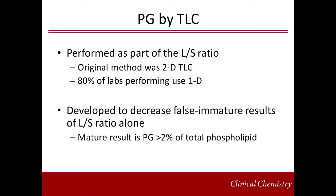The presence or absence of phosphatidylglycerol, or PG, was not originally a part of the LS ratio. However, it was added in order to decrease the number of false immature results. By adding PG to the LS ratio when you do thin layer chromatography, the sensitivity of the LS ratio was maintained while increasing the test specificity. A mature result is a PG greater than 2% of total phospholipid. The main advantage of measuring PG is that it's not affected by blood or meconium. However, if the PG is performed by TLC and expressed as a ratio of PG to sphingomyelin, the test is not valid in the presence of blood since sphingomyelin is present in blood. PG has the disadvantage of being the last lipid to increase in surfactant, around gestational week 36. Therefore, a mature result is good evidence that the infant will not develop RDS.